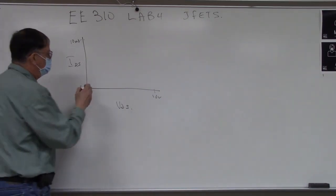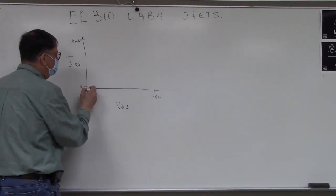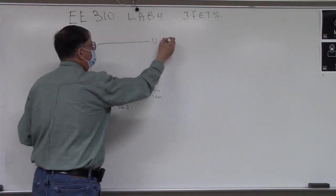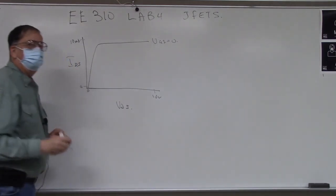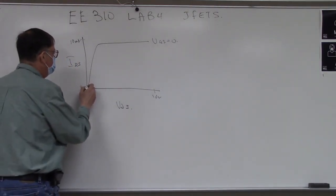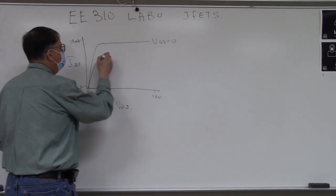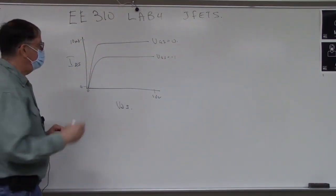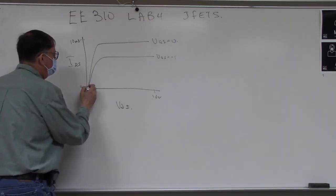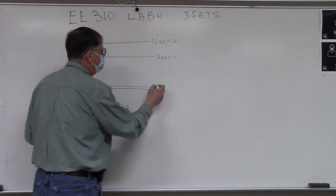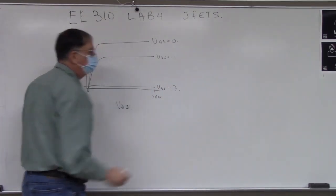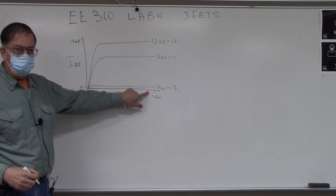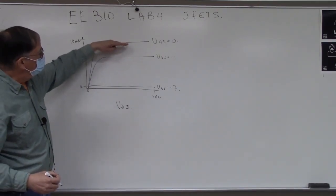Each curve is a different value of VGS. This curve here is going to be VGS of zero, and then we're going to drop the VGS to minus one and take another curve, etc. When we're done, we're going to get down to about a VGS of around minus seven, and then once we get to the very bottom the transistor is in pinch-off and we're going to stop. So we'll take a family of curves.